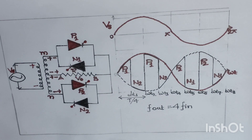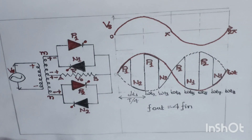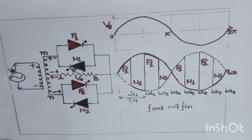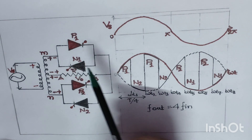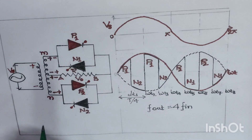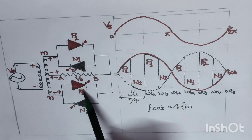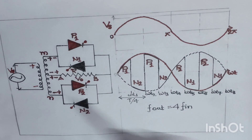Now let us look at the arrangement of this cycloconverter. We have four thyristors: P1, N1, P2, and N2. Thyristors P1 and N1 are connected in anti-parallel; similarly, thyristors P2 and N2 are also connected in anti-parallel. Thyristors P1 and P2 are called the positive group thyristors, and thyristors N1 and N2 are called the negative group thyristors.